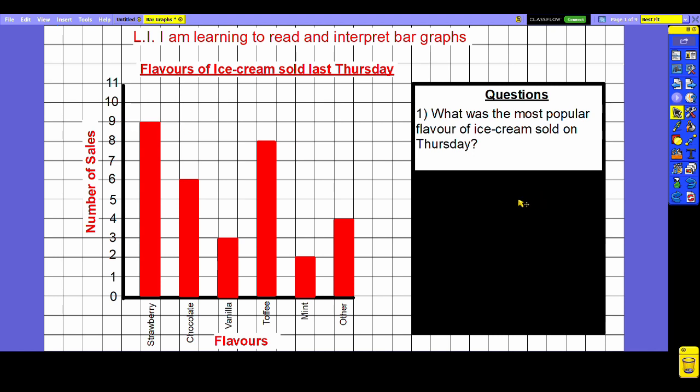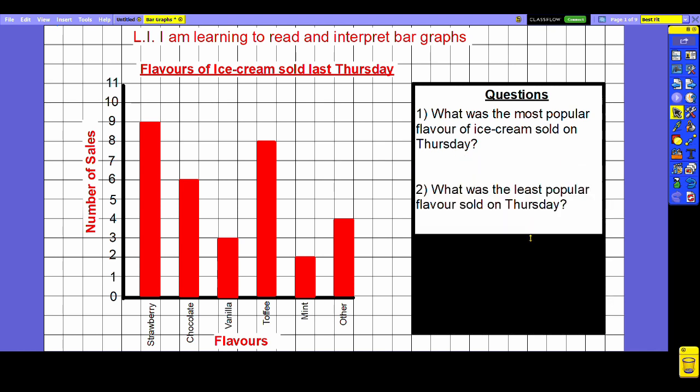This next question is very similar but we're being asked what was the least popular flavor sold on Thursday. Well if the most popular is the biggest column, the least popular must be the smallest column, and unsurprisingly in my opinion it's mint with only two sales.